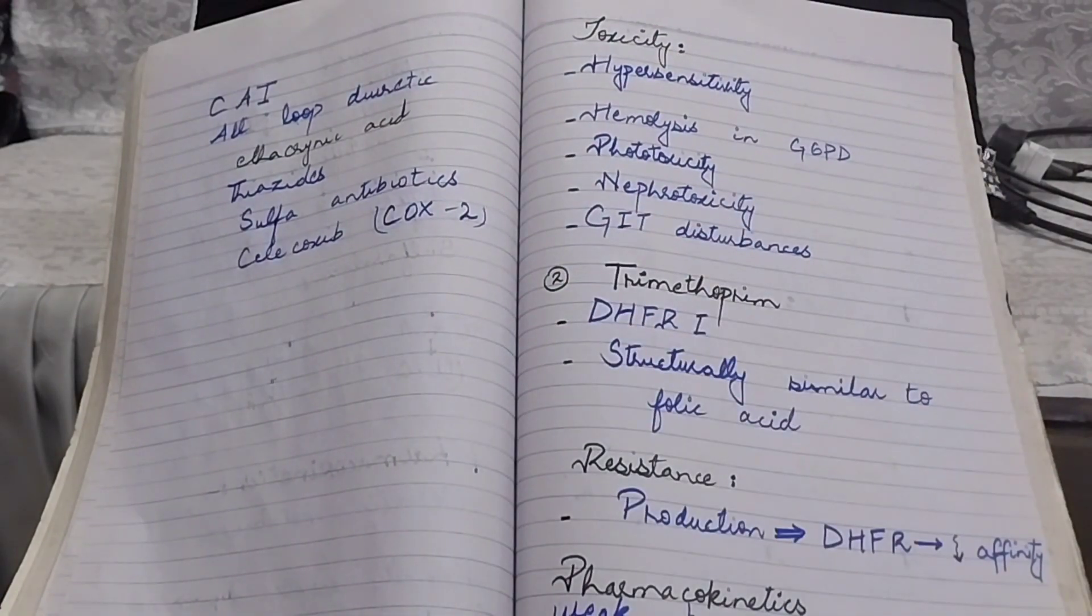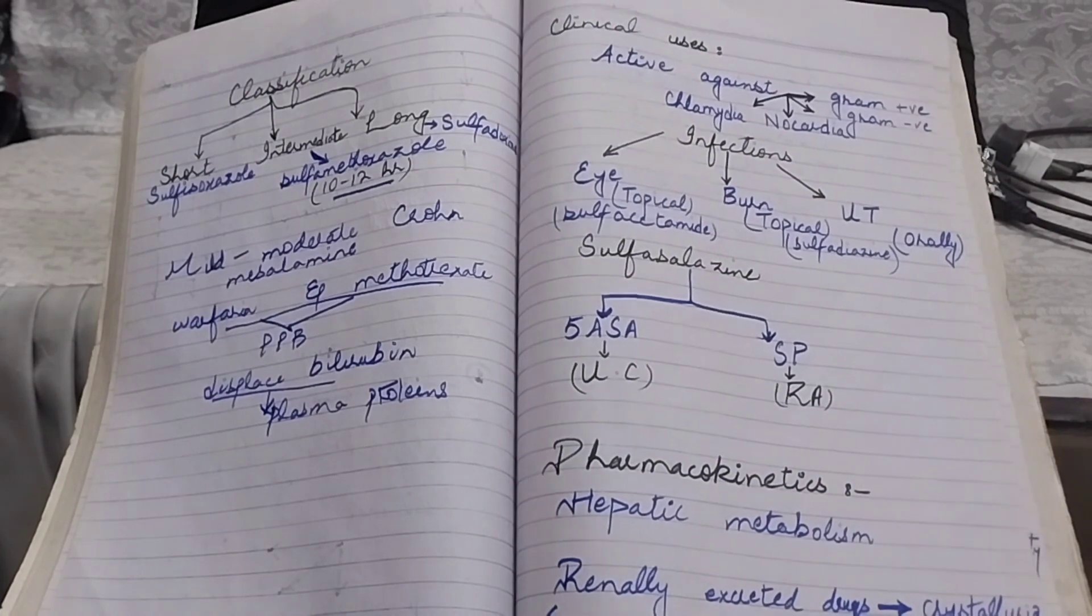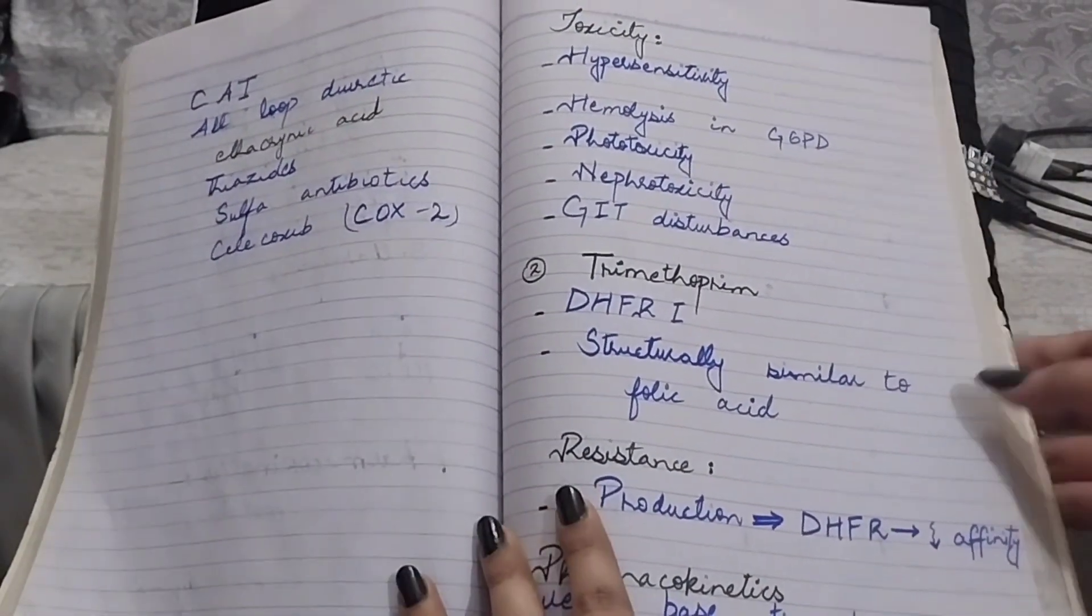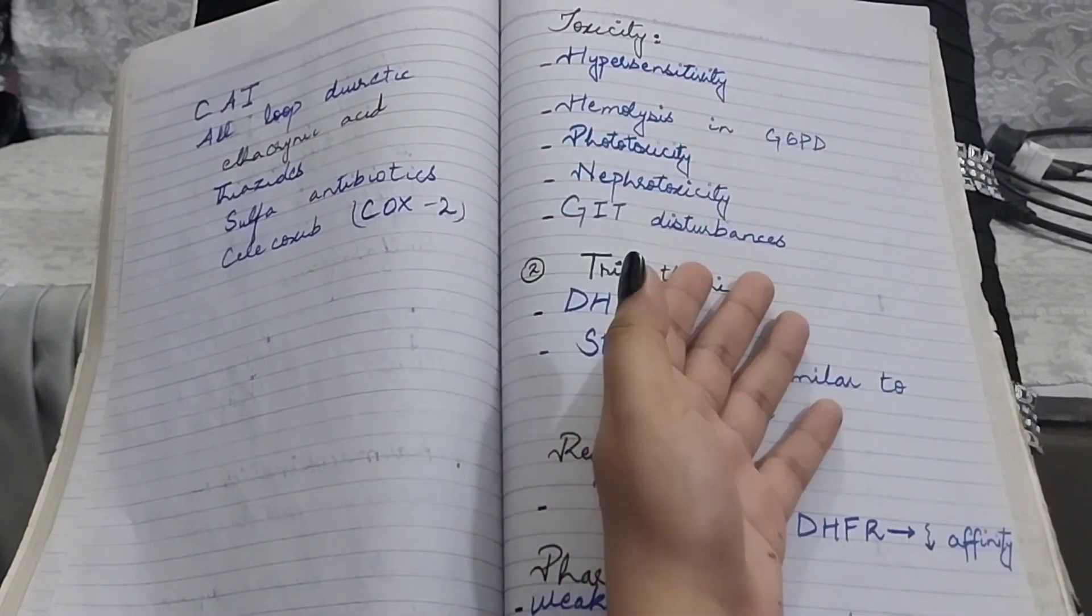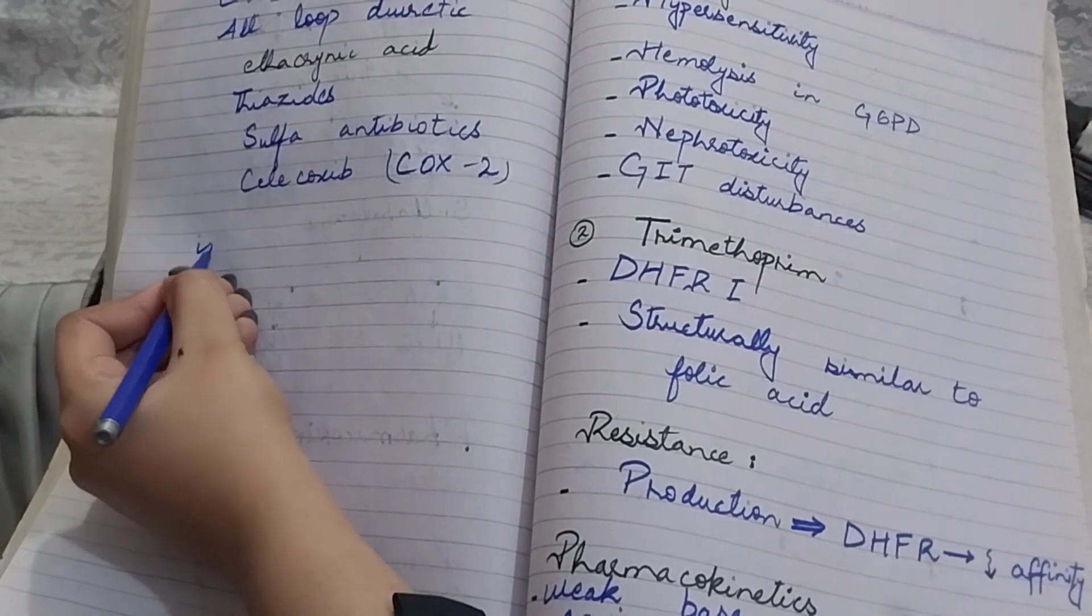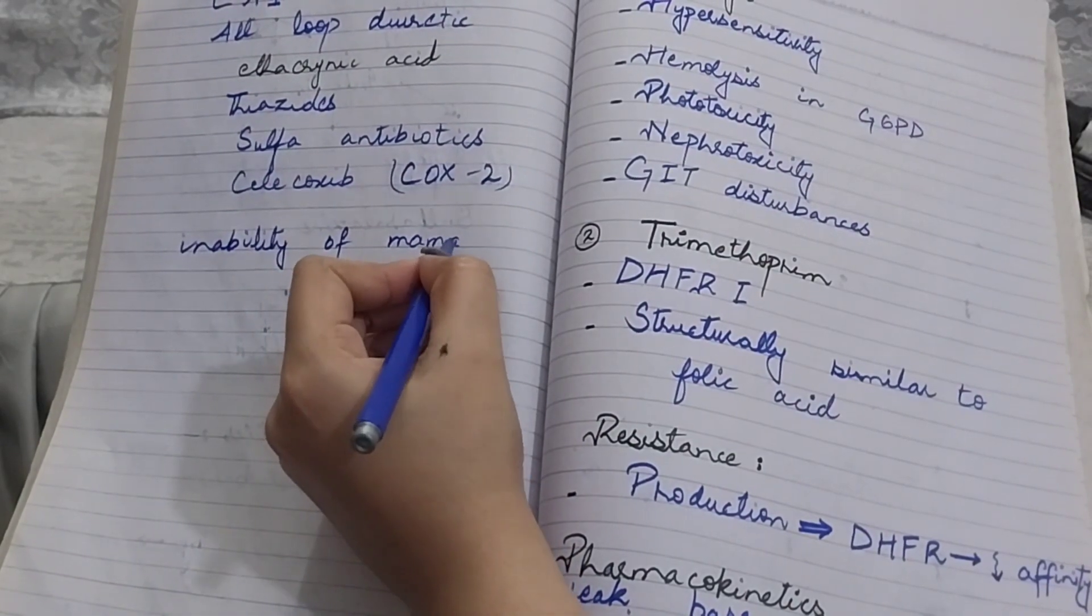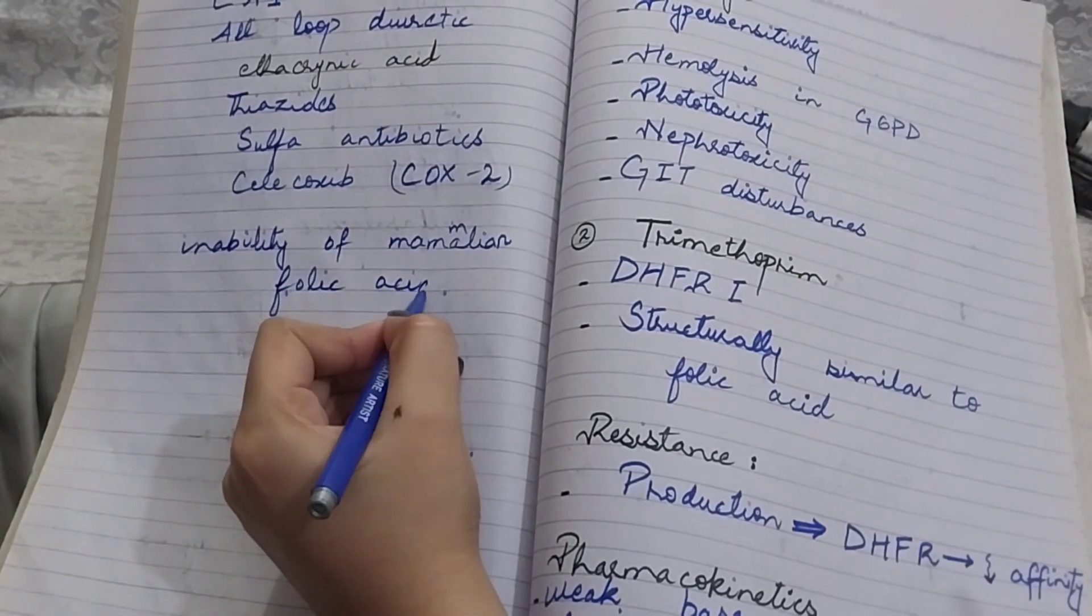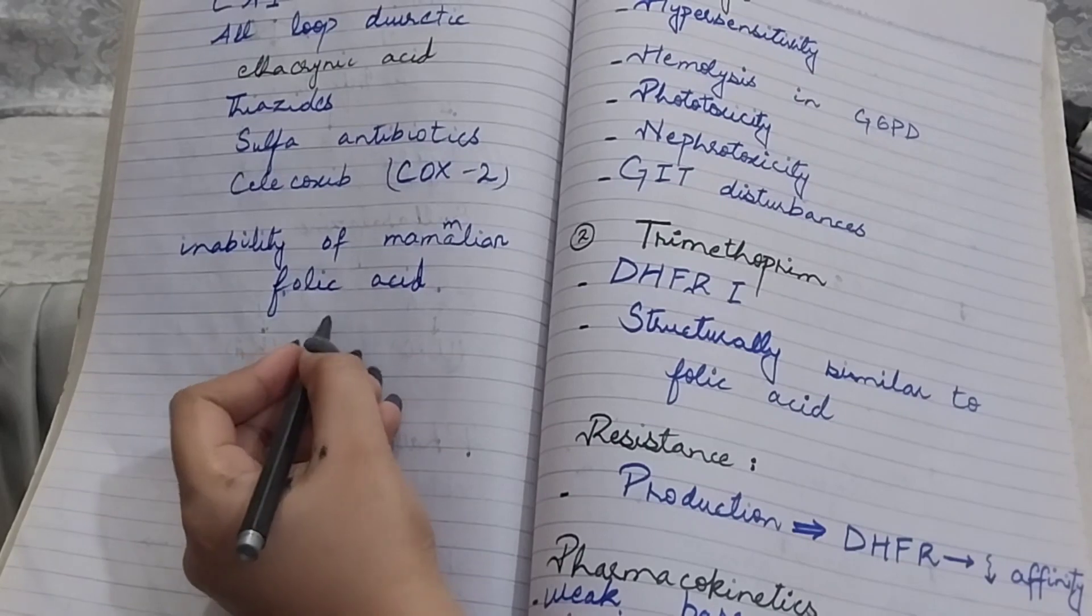It can also cause nephrotoxicity. As we have discussed before, sulfonamide may precipitate in urine at acidic pH, causing crystalluria and hematuria, and of course GIT disturbances that include nausea, vomiting, and diarrhea. These are common side effects of sulfonamide. The selective toxicity of sulfonamide results from inability of mammalian cells to synthesize folic acid, so patients that are using sulfonamide must use preformed folic acid that is present in their diet.